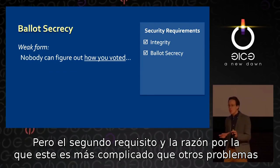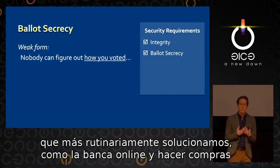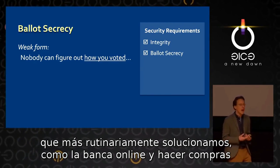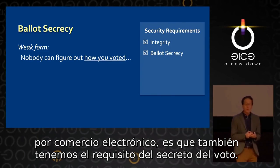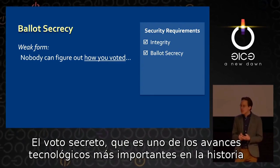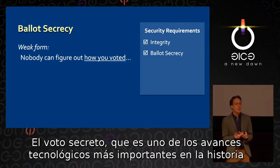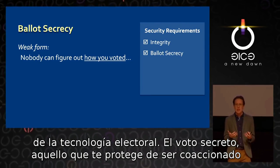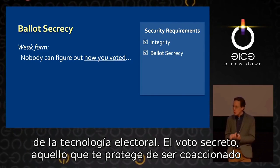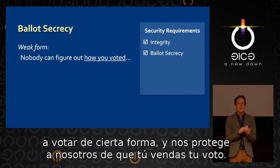The second requirement — and the reason this is more complicated than other problems we more routinely solve, things like banking online and making purchases in electronic commerce — is we also have this requirement for ballot secrecy. The secret ballot, which is one of the most important technological advances in the history of election technology, is the thing that protects you from being coerced into voting a certain way and protects us from you selling your ballot.